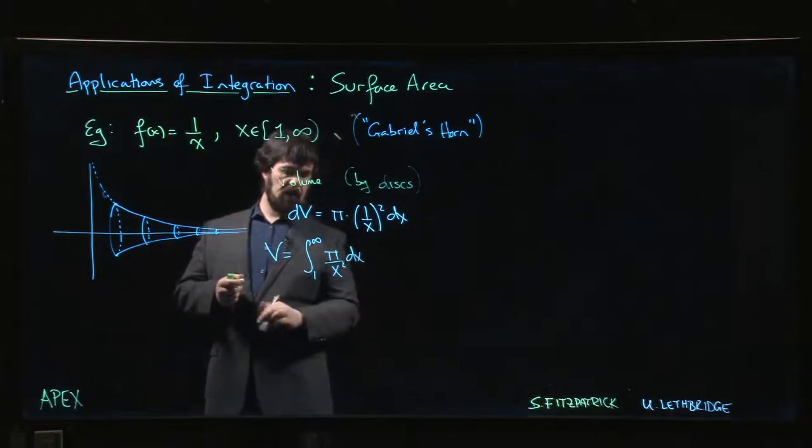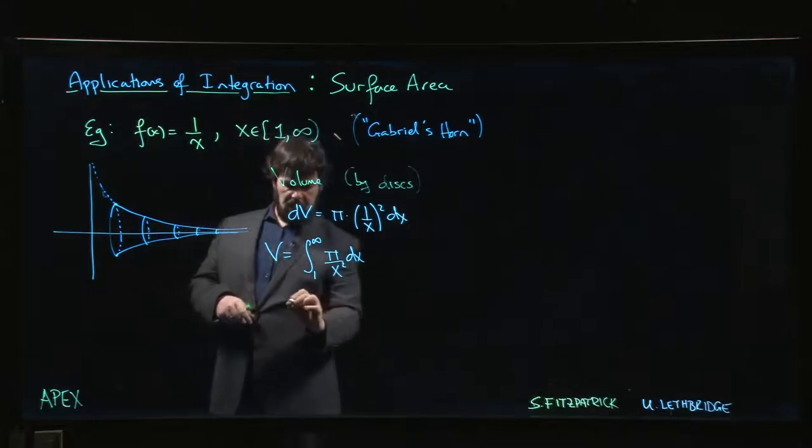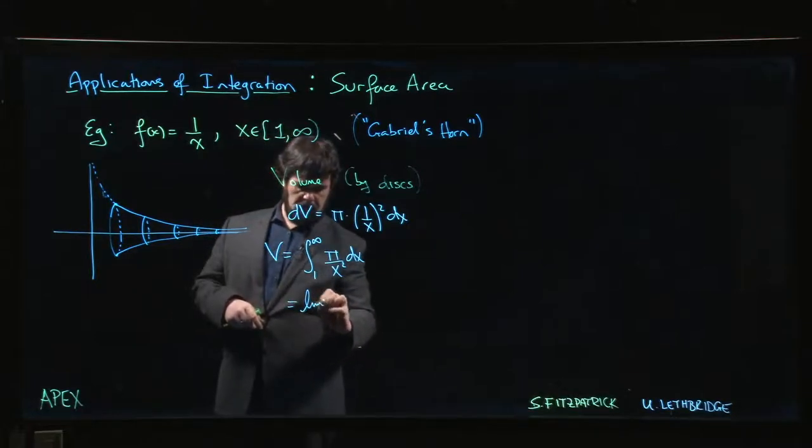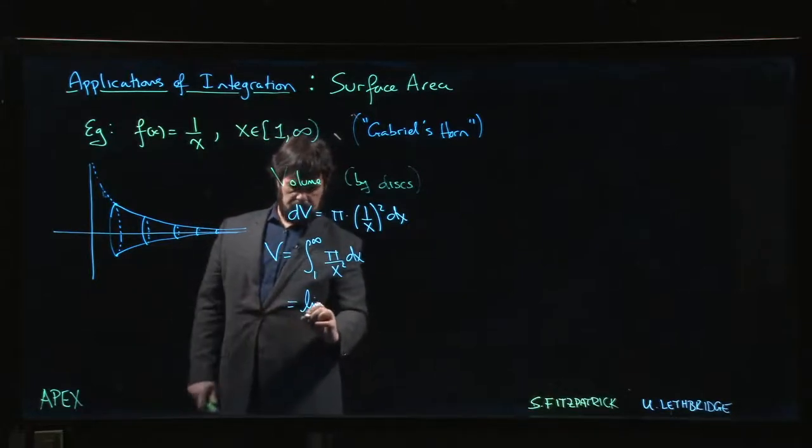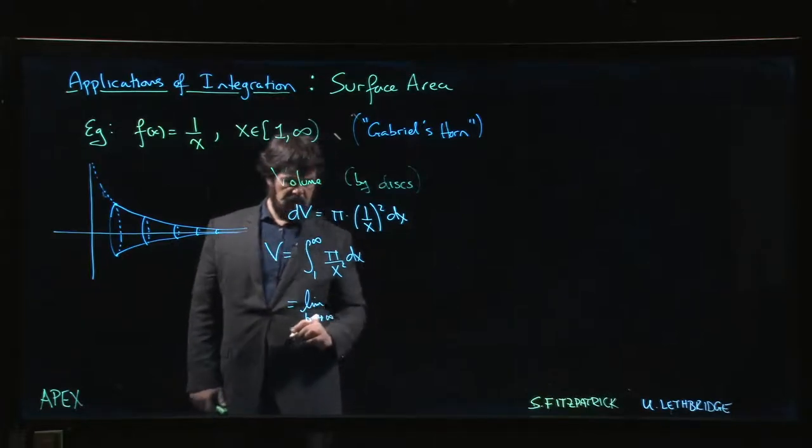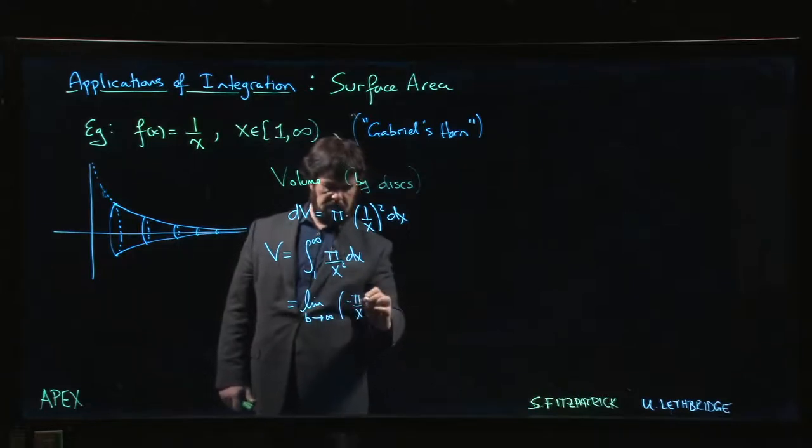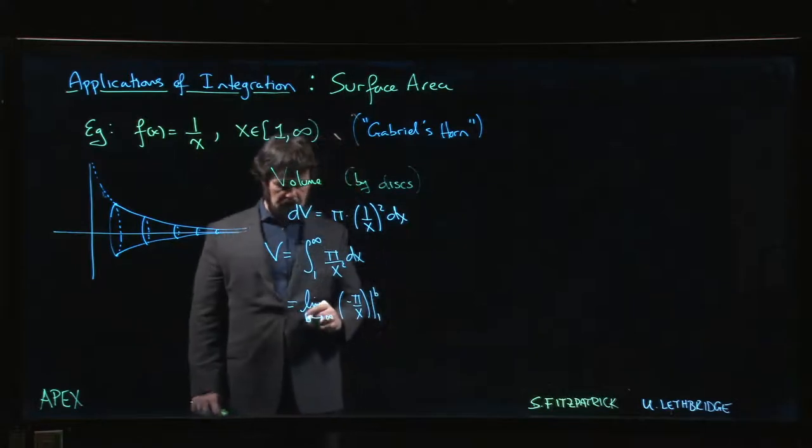Well, that's actually doable. That's the limit as, let's say you call it b, b going to infinity of -π. If we take the antiderivative we get -π over x, evaluated from 1 to b.